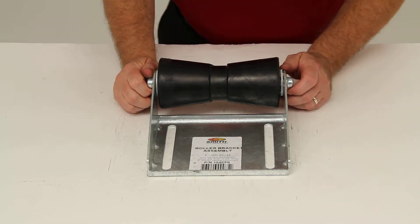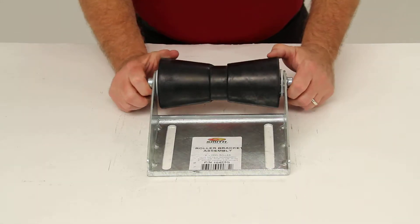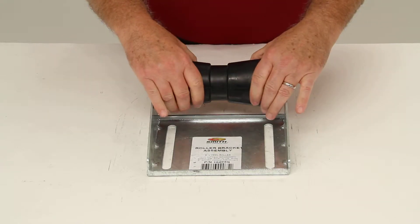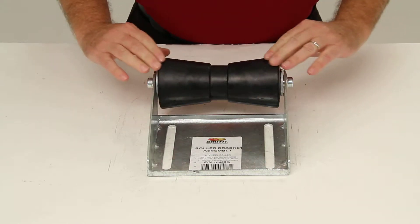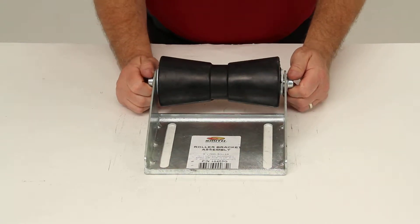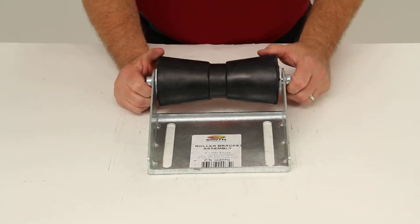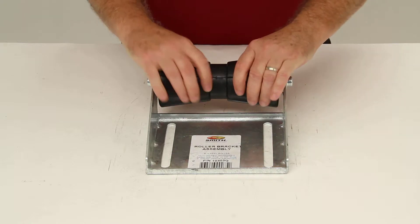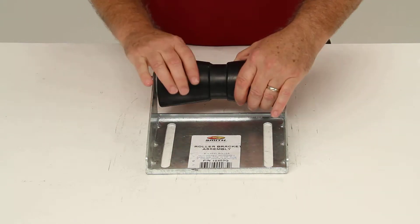Today we're going to review part number CE10403G. This is the CE Smith Deep V Keel Roller Assembly for boat trailers. This roller assembly will support your boat's keel for easy loading and safe transport on your trailer.